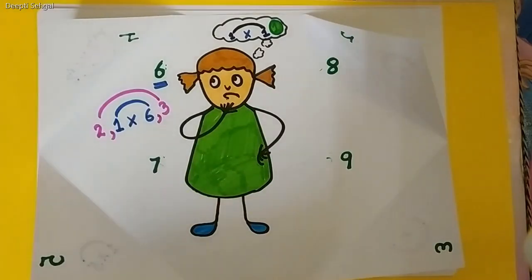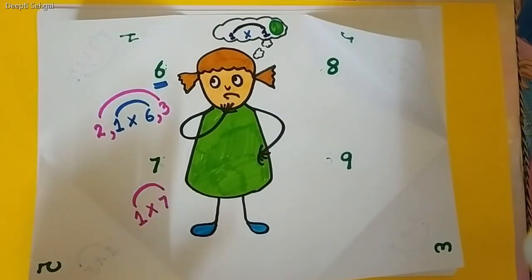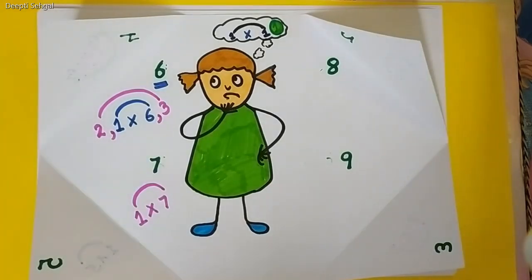And she went back and then started thinking again. She drew in her mind the rainbow of 7 and she came to know, this is also a single color rainbow.